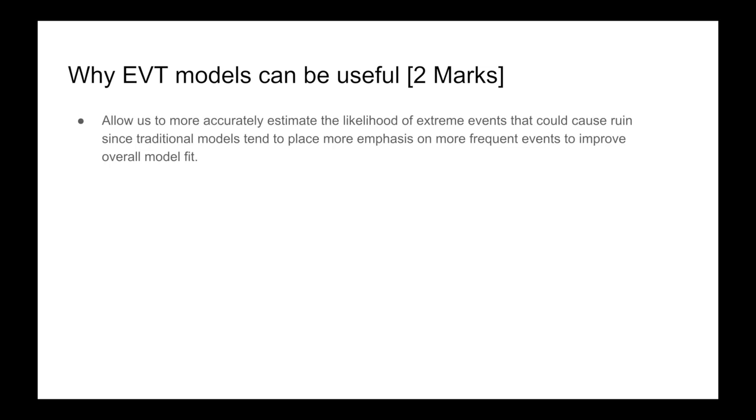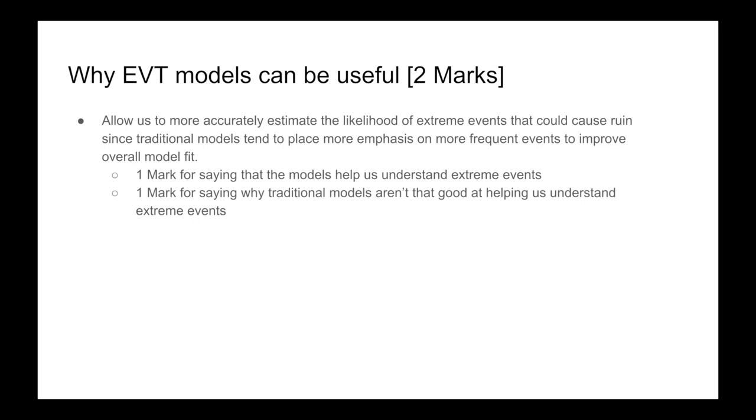Essentially, it's a very easy answer. Extreme value theory models allow us to more accurately estimate the likelihood of extreme events that could cause ruin, since traditional models tend to place more emphasis on more frequent events to improve overall model fit. You'll get one mark for saying the model helps us understand extreme events, and one mark for saying why traditional models aren't that good at helping us understand extreme events.